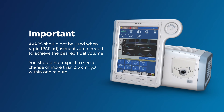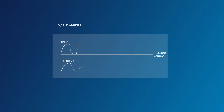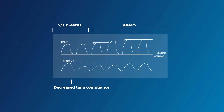So don't use it on all patients, but do use it on the right patients. Remember, in chronic conditions, patients' lung compliance and effort may drop if the disease progresses. AVAPS mode can assist many patients in maintaining their tidal volume — in fact, it can assist many patients with chronic respiratory failure in need of ventilatory support.